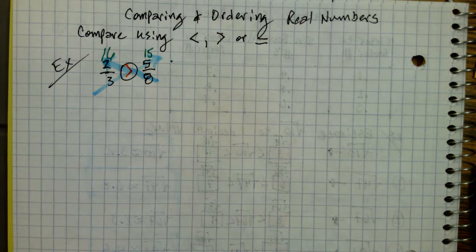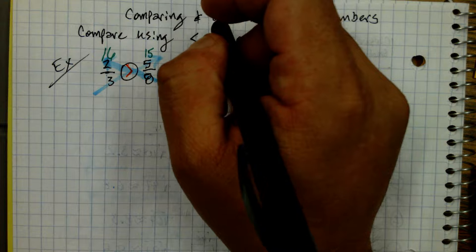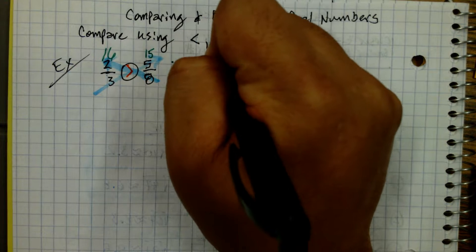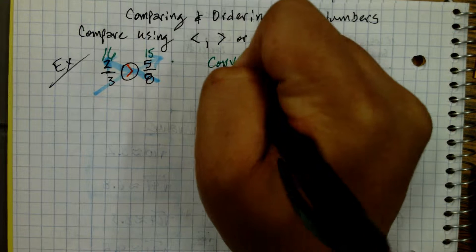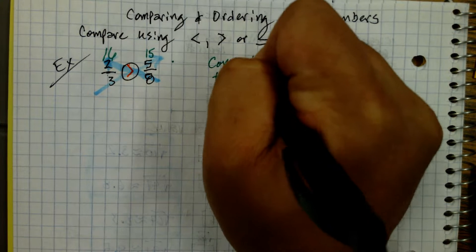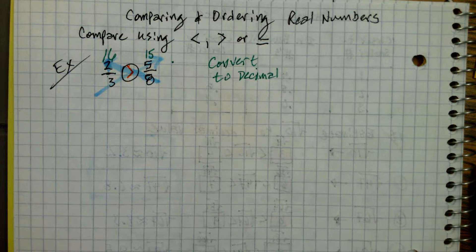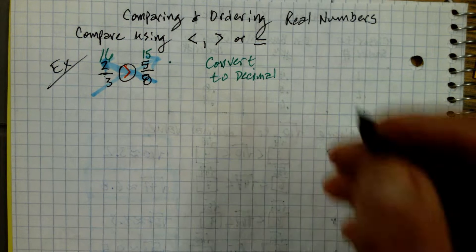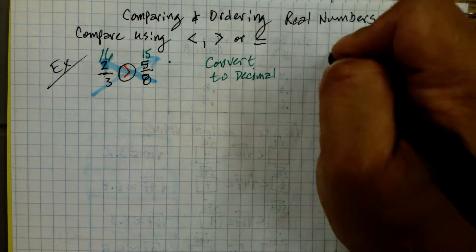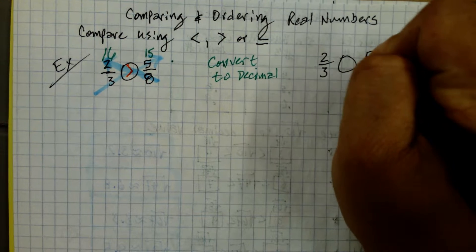The other method we're going to start using today — have you ever converted the numbers to decimal? Let's do that. Remember, you're going to have a calculator available with all the basic functions: add, subtract, multiply, divide. So let's do the same numbers, but this time we're going to compare them by changing them to decimal. So we've got two-thirds and five-eighths.